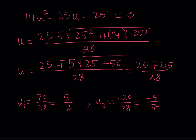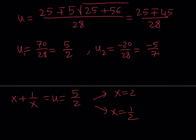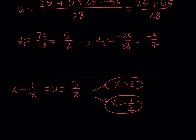I got two u values, but I still need to find the x values. Since x plus 1 over x equals u, and u₁ equals 5/2: solving x plus 1 over x = 5/2 gives x equals 2 or x equals 1/2. In a reciprocal equation, if x₁ is a solution then 1 over x₁ is also a solution. We already confirmed x equals 2 is valid, so x equals 1/2 is also a valid solution.